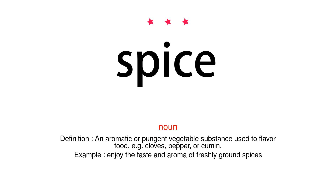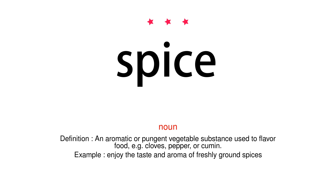Noun. Definition. An aromatic or pungent vegetable substance used to flavor food, e.g. cloves, pepper, or cumin. Example: Enjoy the taste and aroma of freshly ground spices.